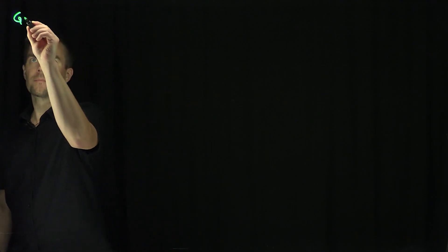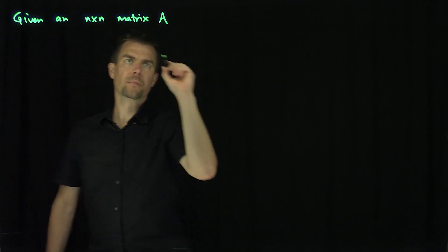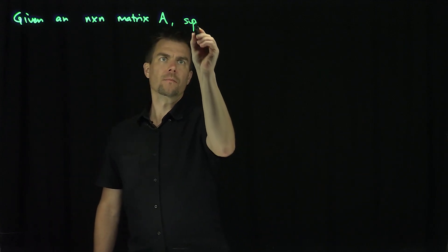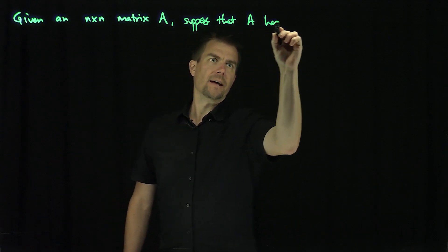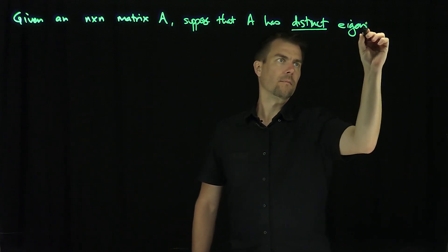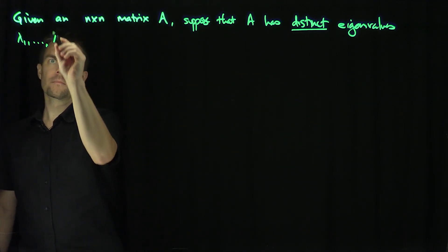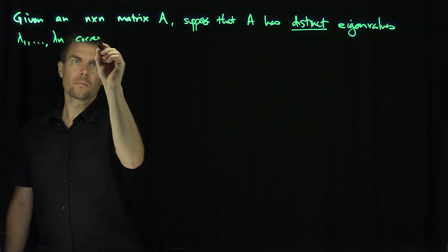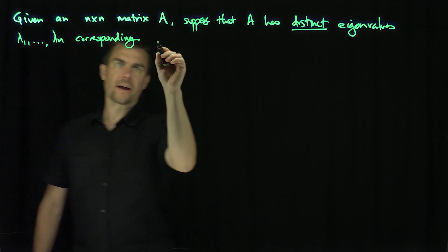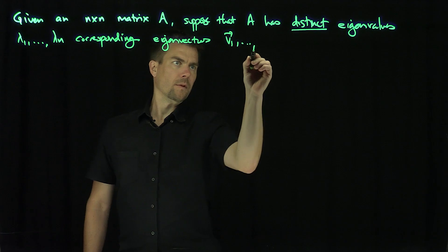Hello students. In this video we'll discuss the case of distinct eigenvalues and understand linear independence in this situation. Given an n by n matrix A, let's suppose that A has distinct eigenvalues lambda 1 through lambda n, corresponding to eigenvectors v1 down to vn.